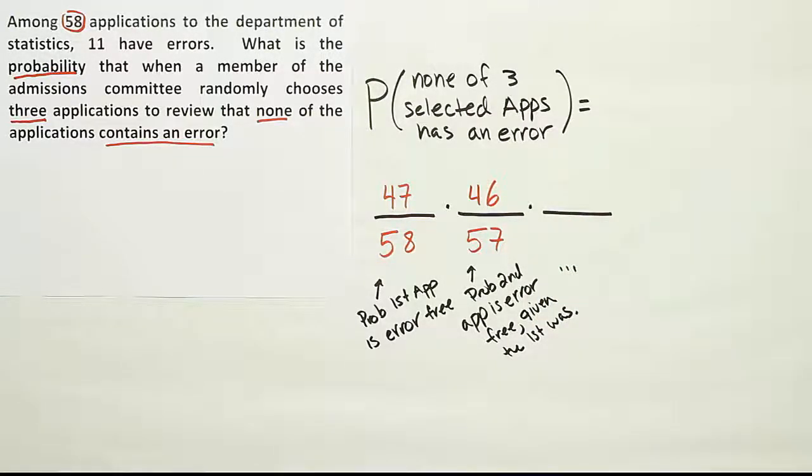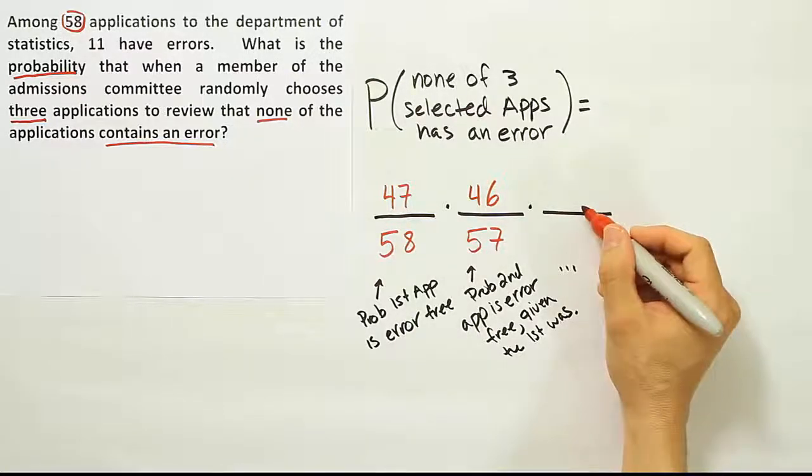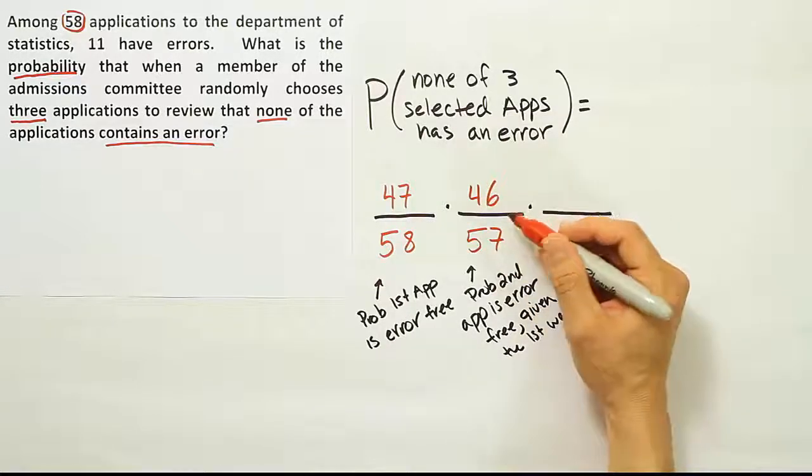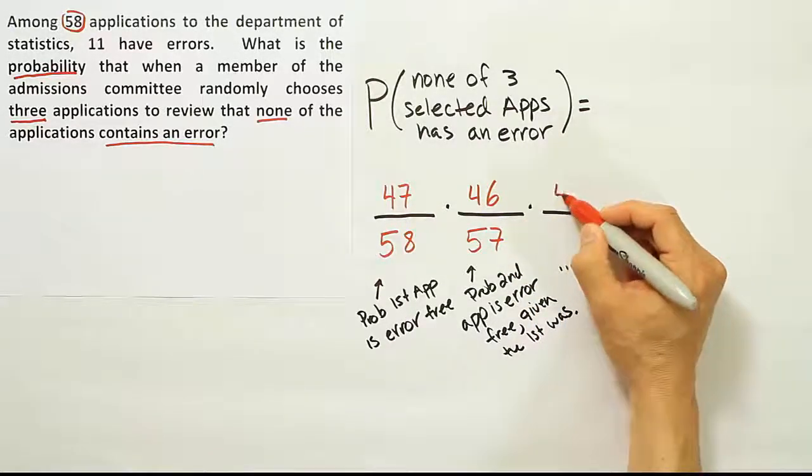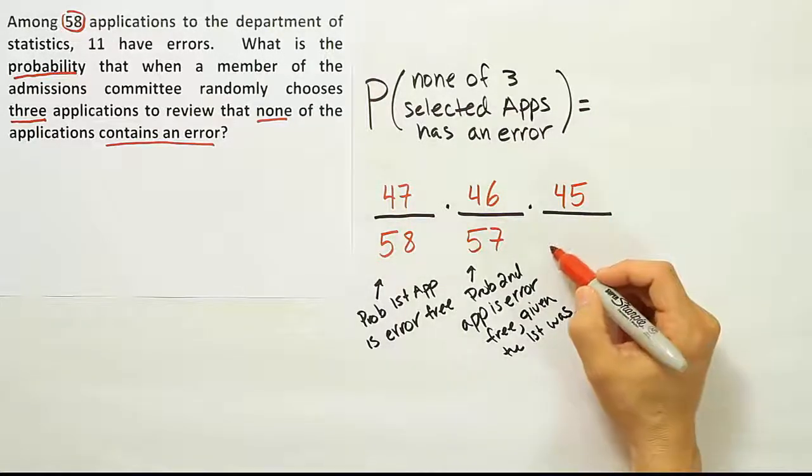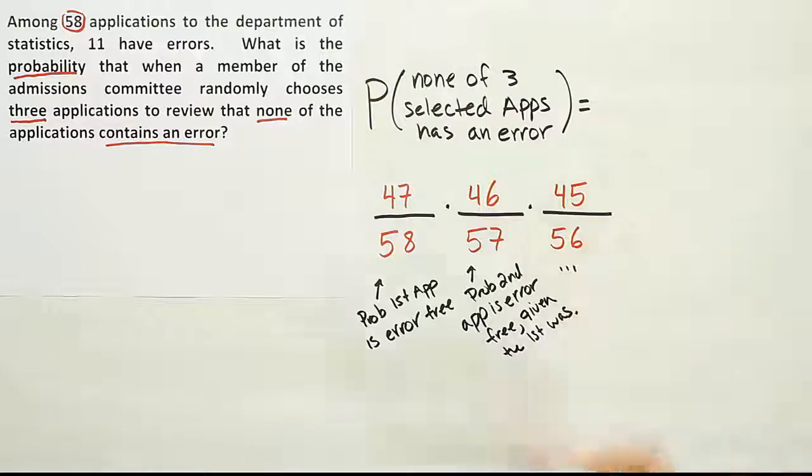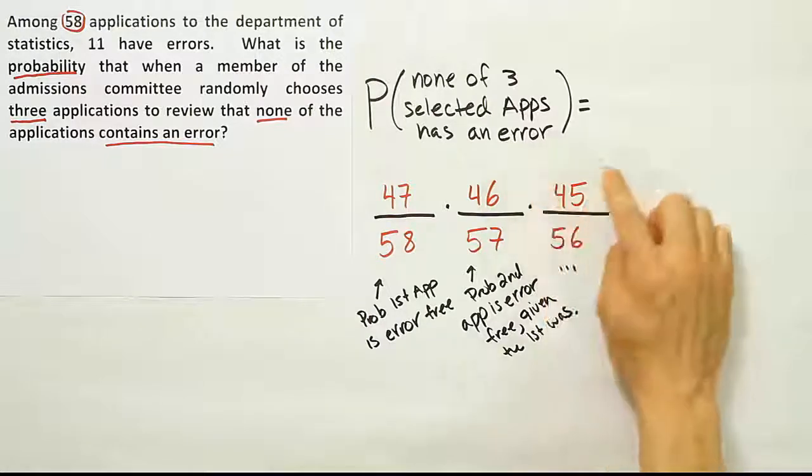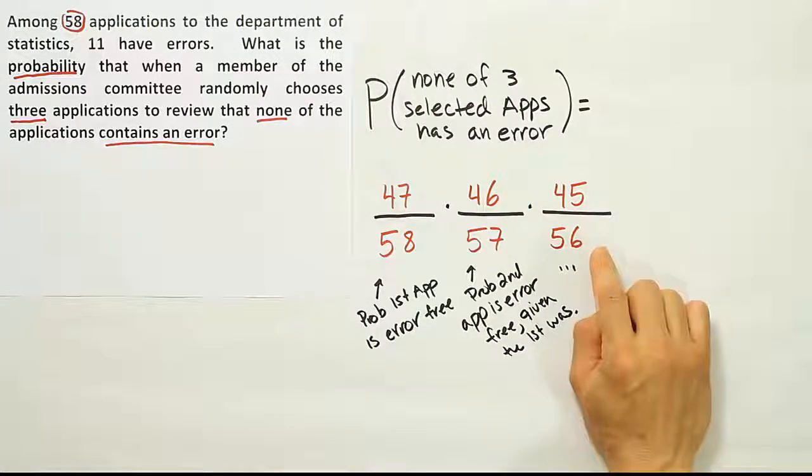How many applications would be left that do not have errors? There would only be 45 now. There were 46 before we took the last one. When we took one, we're left with only 45 applications in the batch that have no errors, and there would be only a total of 56 to choose from. So the probability that last application is error free is 45 over 56.